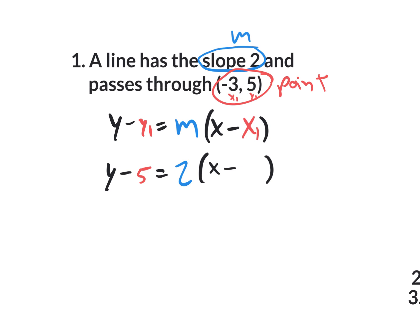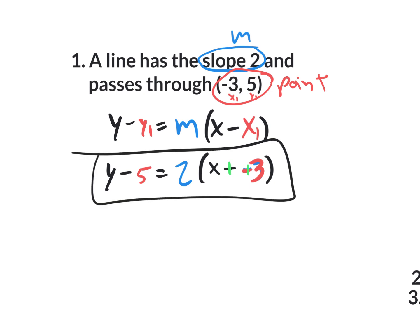Your x1 value is negative 3. The minus minus changes to plus, so the equation reads y minus 5 equals 2 times (x plus 3). That is your point-slope form equation for a line with slope 2 passing through negative 3, 5.